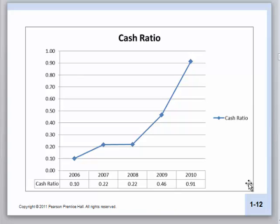The cash ratio gives us a picture of in general how much money is in the checkbook. Over the last five years, the amount of cash available has increased substantially. Coors is actually getting to a point where they can almost pay off all of their current liabilities — all of their current bills — just by writing a check. That is indicative of a company that is very liquid and shouldn't have much of a problem paying its bills.